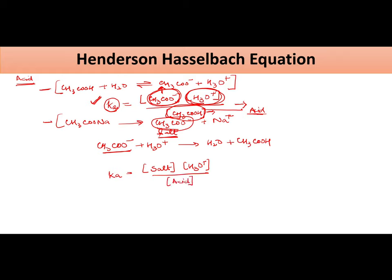So you can write Ka equals salt times H3O positive divided by acid. If you rearrange it, it will give you H3O positive will be equal to Ka times acid divided by salt.